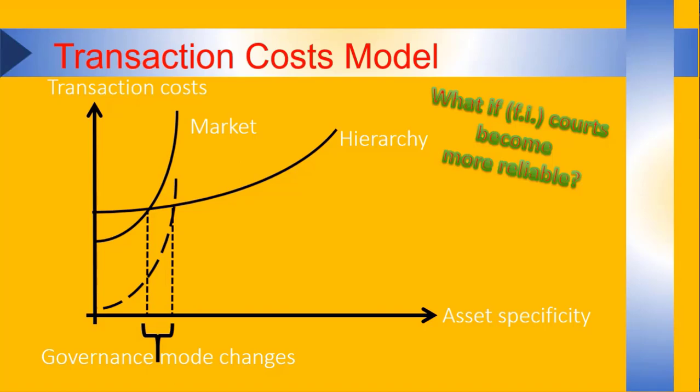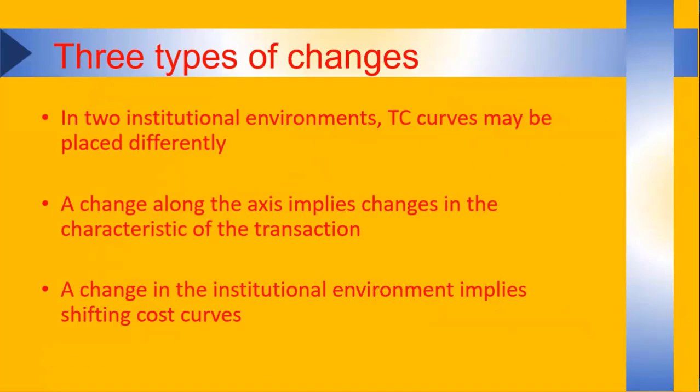And for transactions between this arc, it used to be cheaper to coordinate through a hierarchy. But now the market has become cheaper. So for these transactions, you will see a change in governance mode. What that implies in practice? Well, for example, I talked earlier about call centers. Call centers became much more popular when IT, when phone lines became stable. So when communication technology developed and became cheaper. Then call center activity that was initially done in a hierarchy could suddenly be outsourced. Because the cost of that activity had changed.